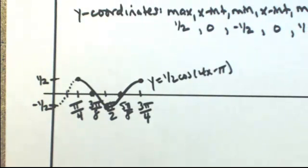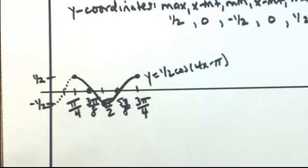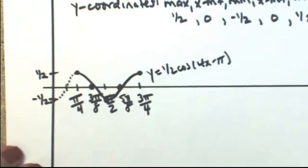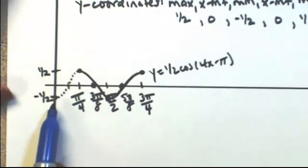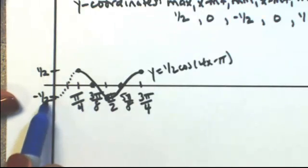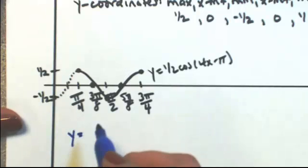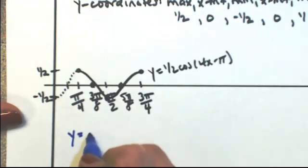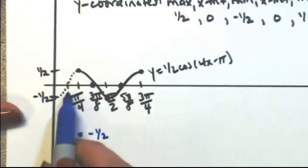we could also view this as another cosine function that's been flipped because it's starting at a min. So if I were to look at this part of the function, this could also be written as y equals, because it's been flipped, it would be negative one-half cosine.